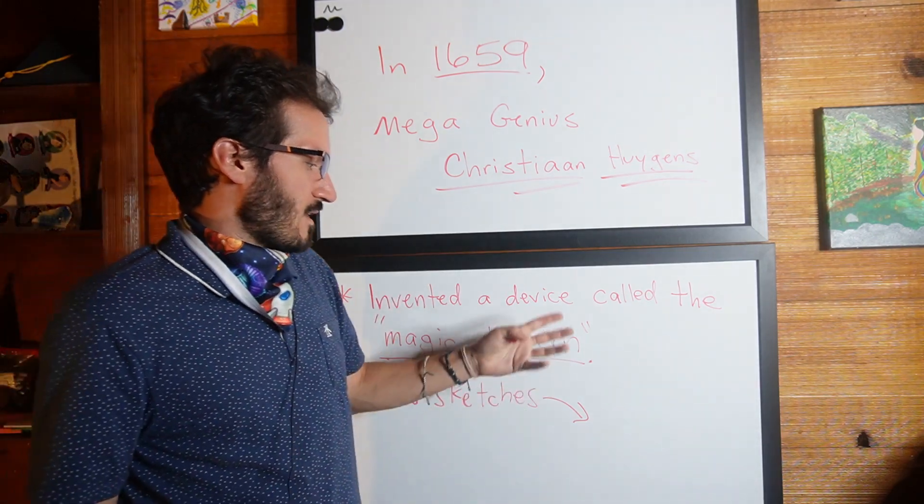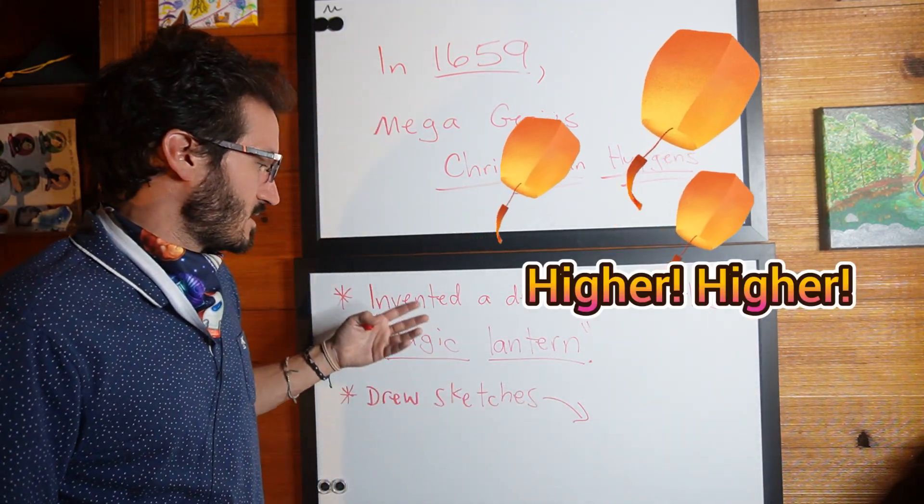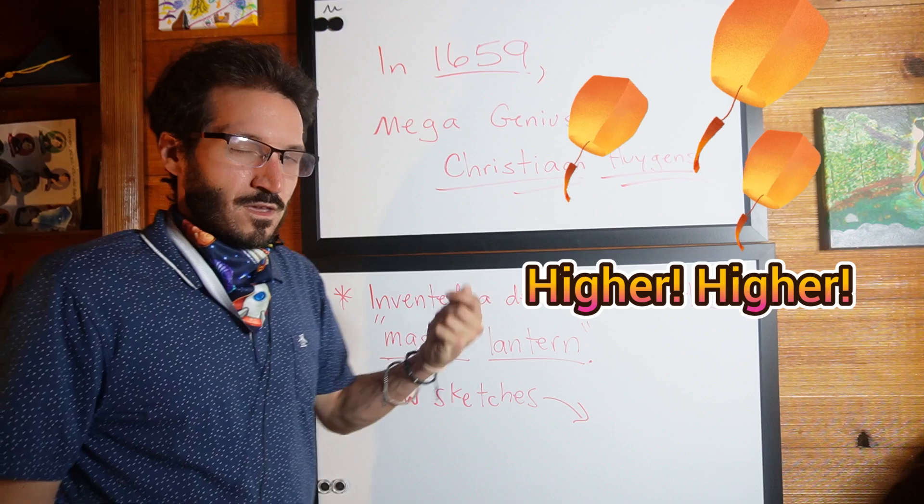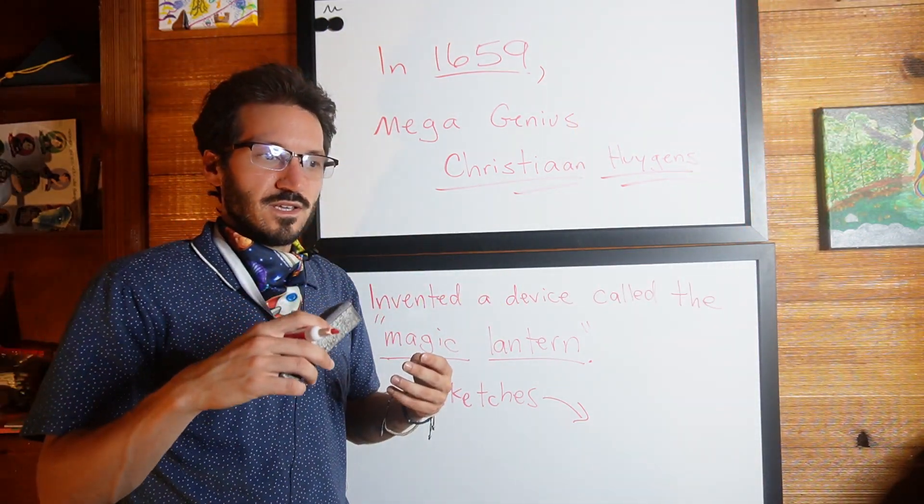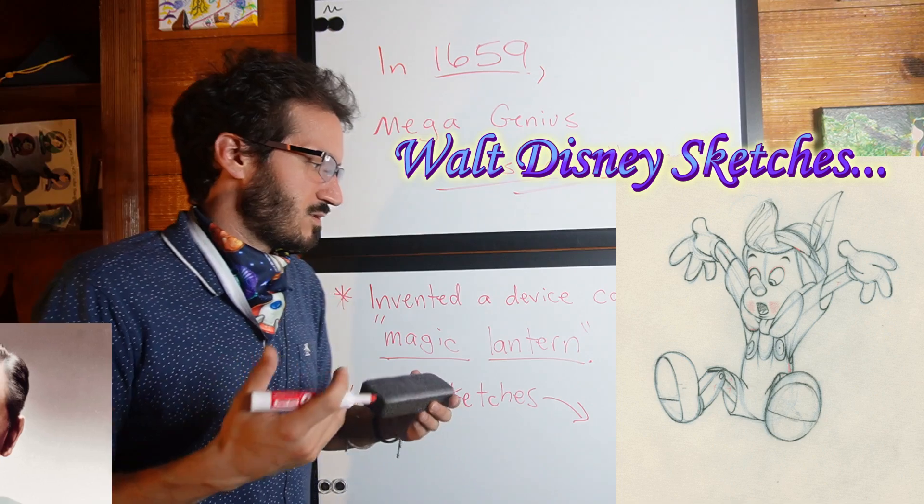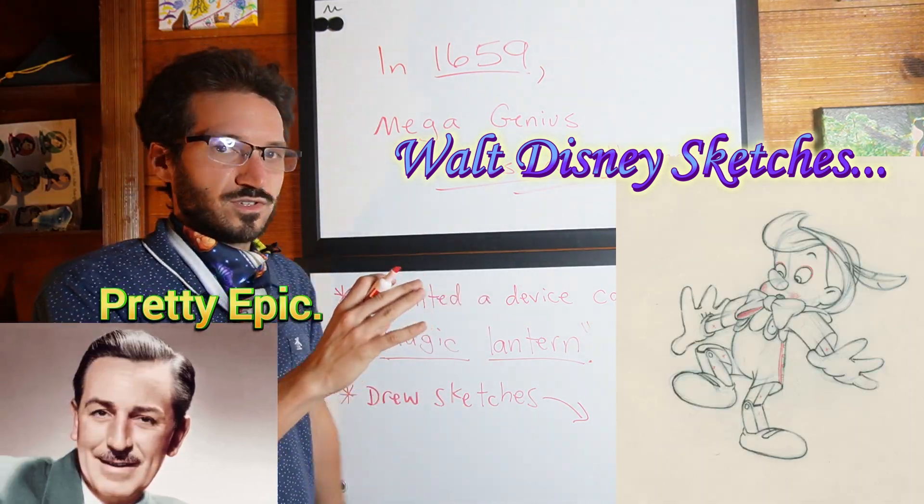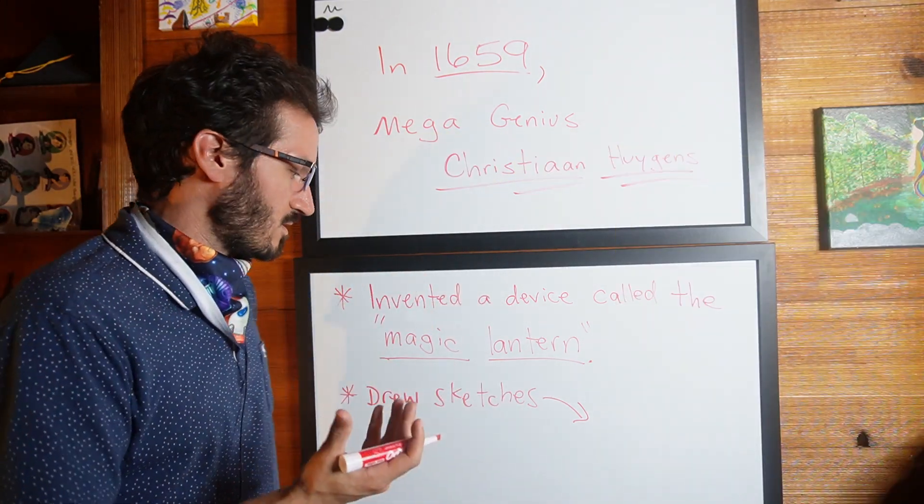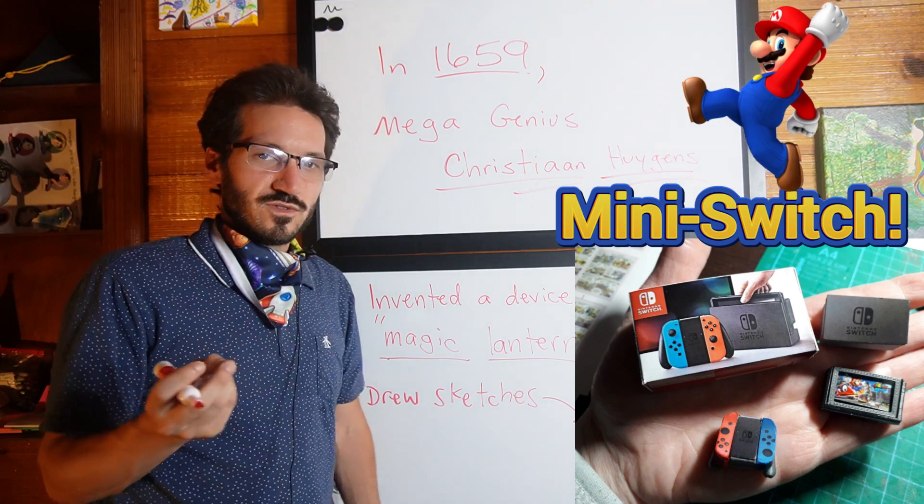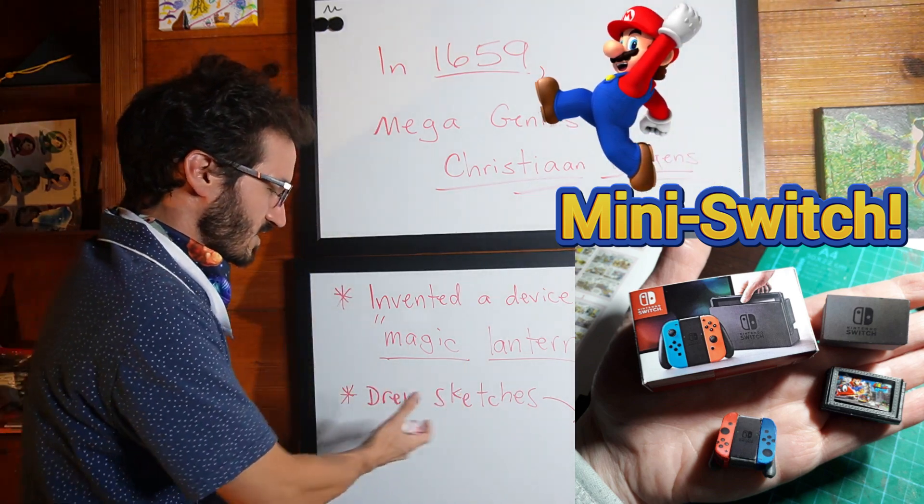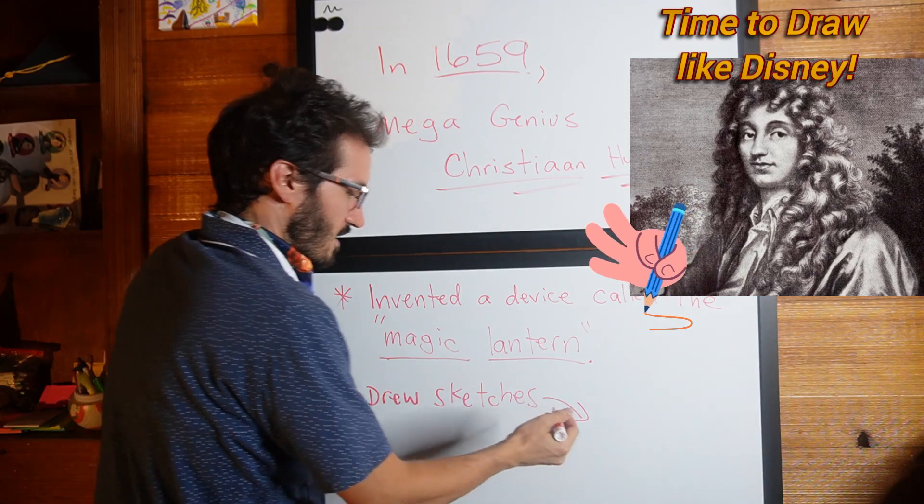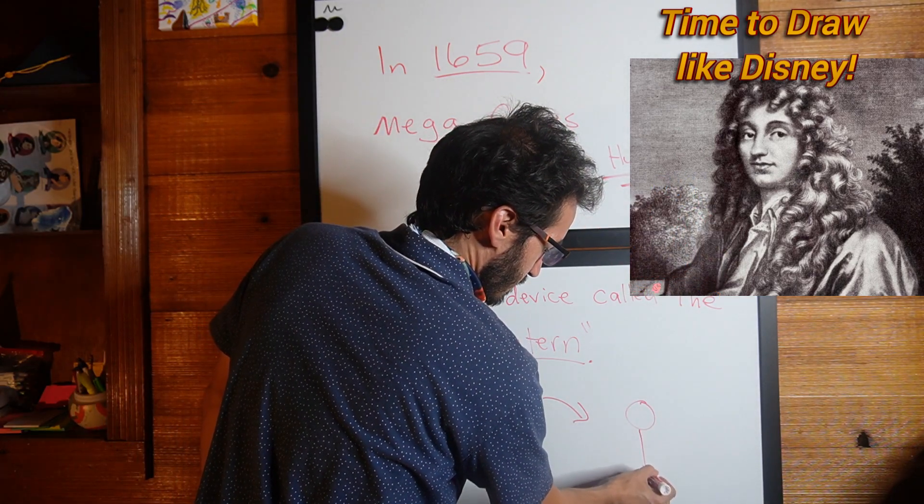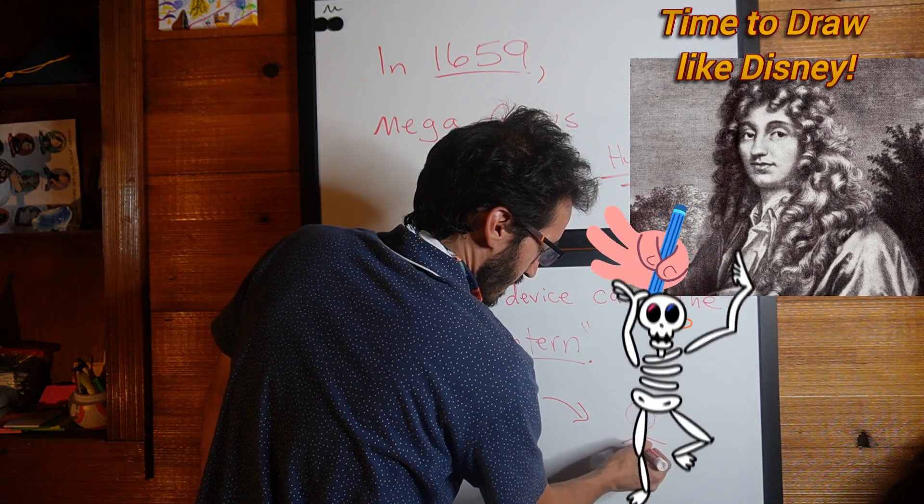It turns out this Magic Lantern that Mr. Huygens invented was very similar. You could put in images—in this case he did sketches—and it would project on a screen, but he made this device a lot smaller. What's really cool is Huygens' first initial sketches, the images he put onto this projection system, were little images of this little guy.